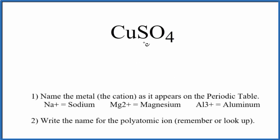To write the name for CuSO4, the first thing we need to recognize is this SO4 right here. This is called the sulfate ion. It's a polyatomic ion.